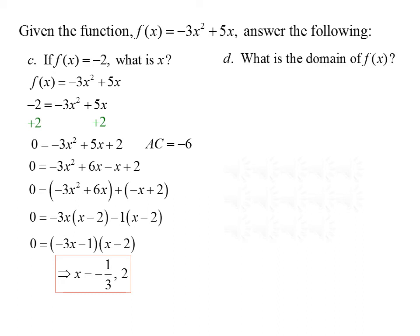Next, we want to determine the domain of f(x). To find the domain, we exclude anything that makes a denominator 0 or makes an even radical negative. Since we don't have a fraction or an even radical here, we don't have to worry about either of those. So the domain is all real numbers — the interval from negative infinity to infinity.